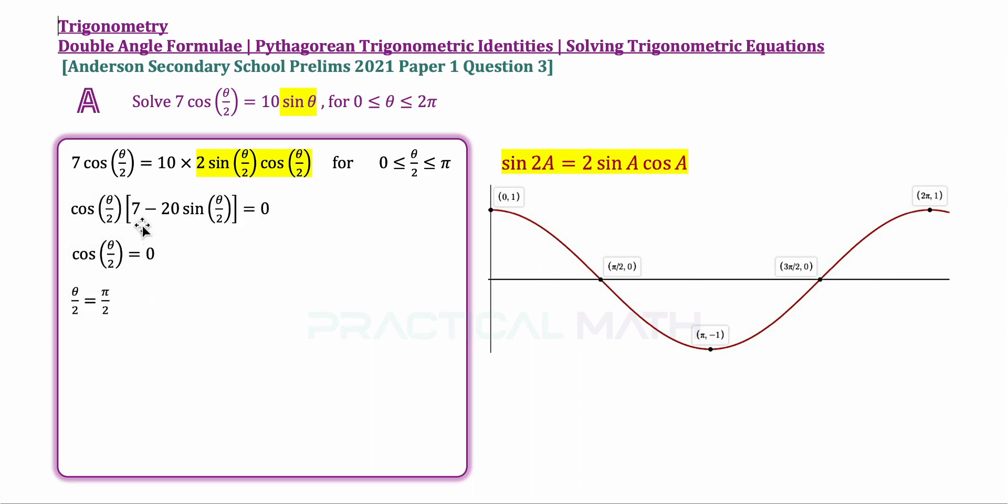Moving to the second solution set, we set 7 minus 20 sine theta over 2 equals 0, and shifting it to the right, we have sine theta over 2 equals 7 over 20. To find our basic angle alpha, we have sine inverse of 7 over 20. So that's our basic angle alpha or reference angle alpha. When will sine be positive? Sine will be positive in the first two quadrants A, S, T, C, first two quadrants.